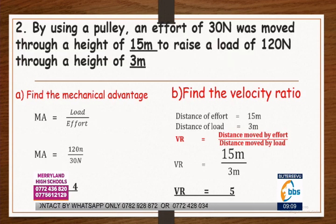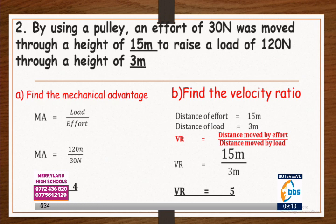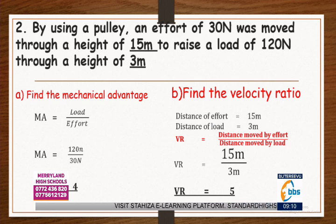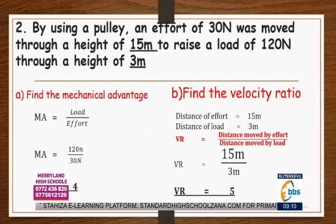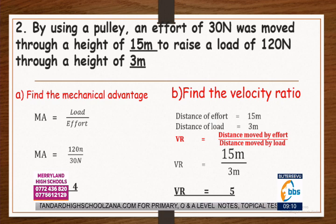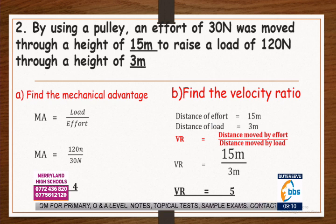Let's go to number two. By using a pulley, an effort of 30 newtons was moved through a height of 15 meters to raise a load of 120 newtons a height of 3 meters. A student named Tusime from Mead Hill in Masaka Primary School pointed out that in the question, meters was written in capital letters, but meter should be written in small letters. If you put a capital M, you are referring to million. Thanks, Tusime.